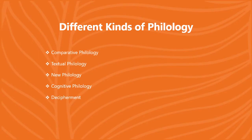These are the different kinds of philology: comparative philology, textual philology, new philology, cognitive philology, and decipherment.